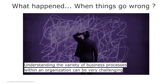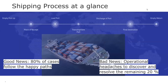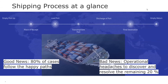Understanding the variety of business processes within an organization can be very challenging. Take the example of a freight shipping process — a cargo vessel initially empty collects goods from a source location and transports them to their final destination. At a high level, this process can be simply represented through a few key steps: loading, transshipment, and discharge at port. The good news is that usually 80% of this shipping process follows the documented and expected path. But the bad news is that the remaining 20% is what causes operational headaches, and a lot of time is spent understanding and reacting to resolve those issues.